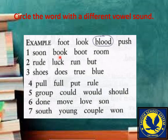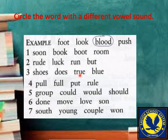آپ نے comments میں لکھنا ہے کہ کون سا word فرق vowel sound کے ساتھ ہے۔ Words are: room, rude, luck, run, but, shoes, does, true, blue — then: pull, full, put, rule۔ Fourth والے میں تھوڑا سا tricky ہے لیکن آپ پہچان سکتے ہیں کہ کون سا ایک word فرق vowel sound کے ساتھ pronounce ہو رہا ہے: pull, full, put, rule۔